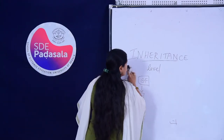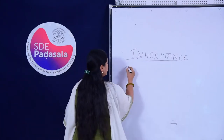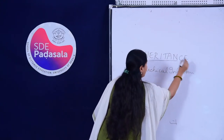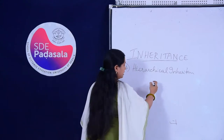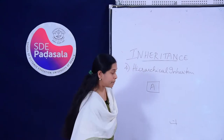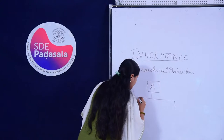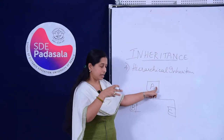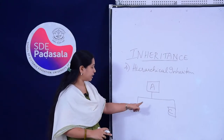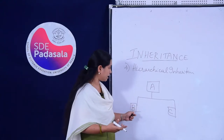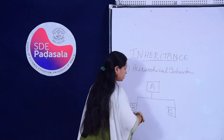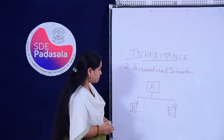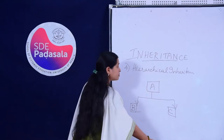The fourth type is hierarchical inheritance. In hierarchical inheritance, there is one base class and multiple derived classes. As a real-life example, a father can give his characteristics to more than one child if he has more than one child. Both children get characteristics from the same father. So a single base class with multiple derived classes — both B and C getting qualities from the parent class — that is hierarchical inheritance.